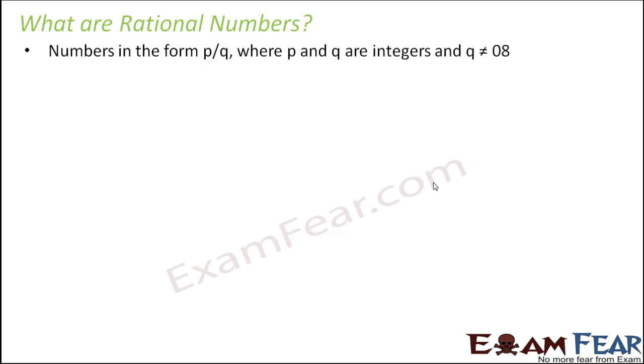So what are rational numbers? These are numbers in the form p by q, where p and q are integers and q is not equal to 0.